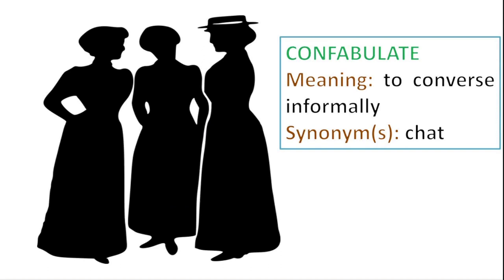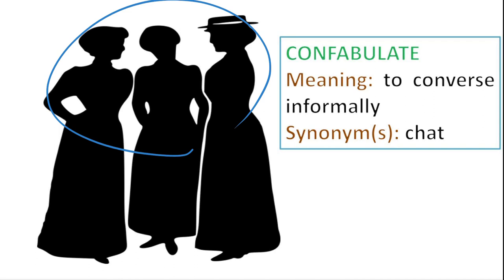Confabulate is just a fancy way of saying talk. All these women here are confabulating — they're just conversing or chatting informally. If you're feeling formal, you don't just chat with your best friend on the phone, you confabulate. It comes from the Latin word com, meaning together, and fabulare, which means to talk — also like how we say fables or tale. That's how you put the word together and say confabulate.